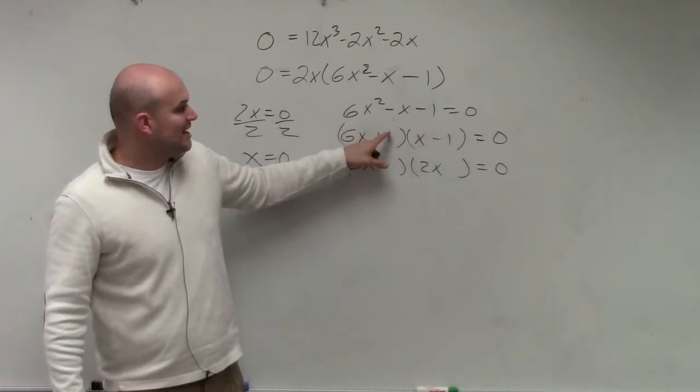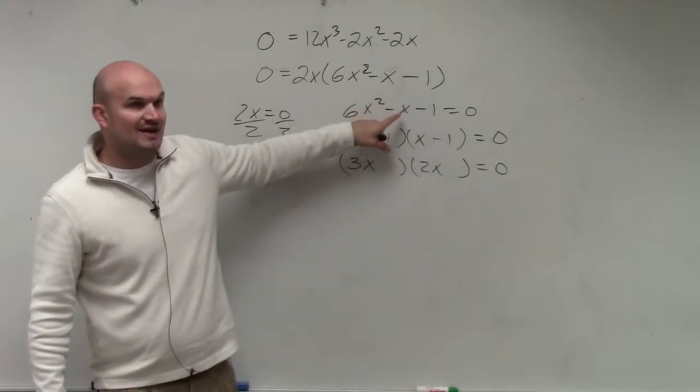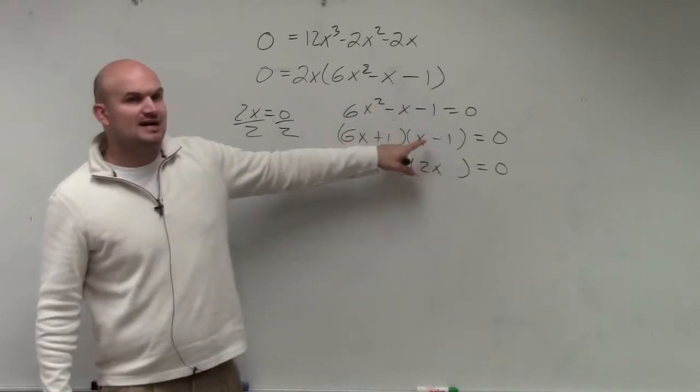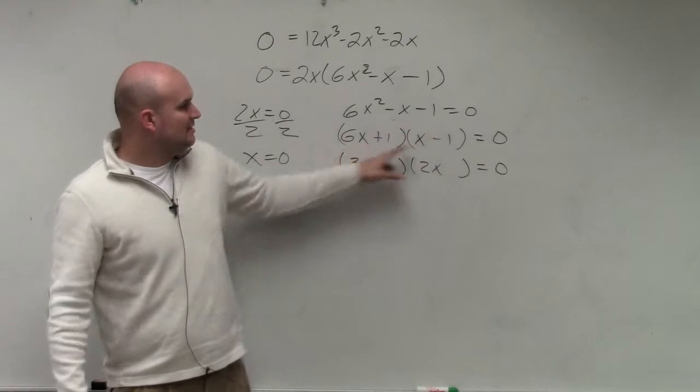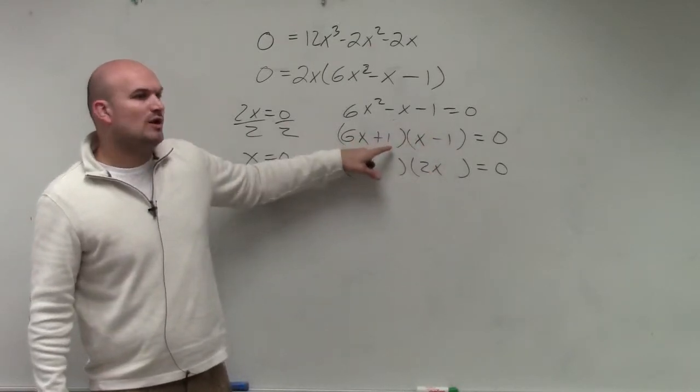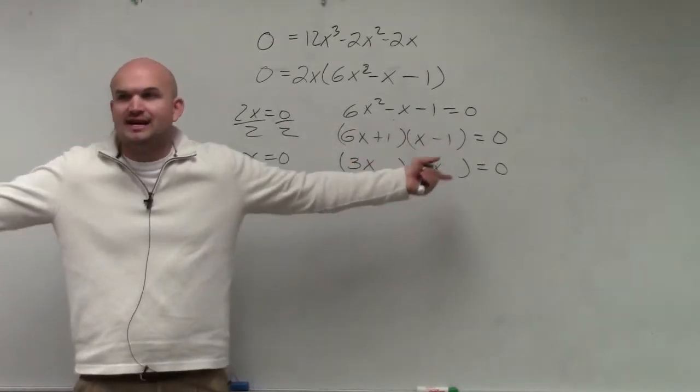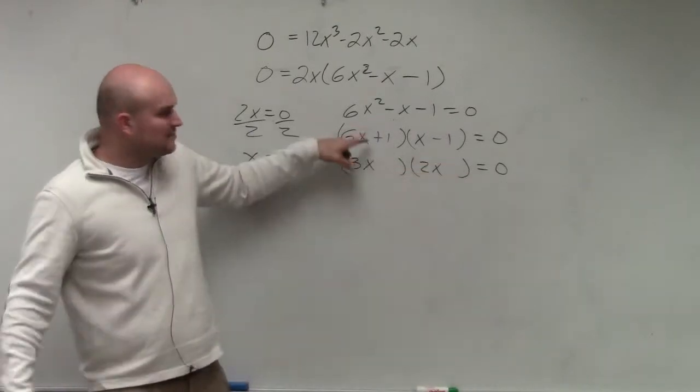Let's see which one, when we multiply the inner and the outer, give us negative x. Well, obviously, we know this is not going to work, right? Because 6 times negative 1 is negative 6x, and x times 1 is 1x. Negative 6x plus 1x is negative 5x, right?